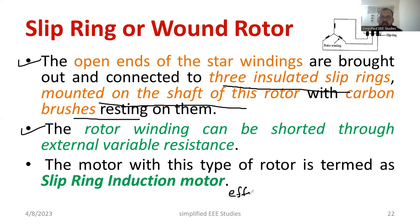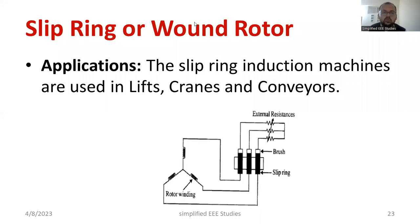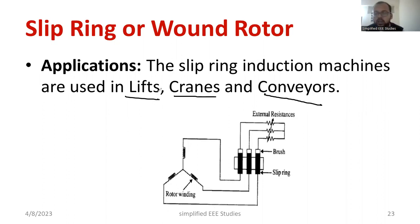In the slip ring induction motor, high starting torque can be achieved, but adding more resistance reduces the overall efficiency. Comparing with the squirrel cage induction motor, the efficiency of the slip ring induction motor is lower. However, the advantage is that speed can be easily controlled and high starting torque is achievable. Applications include cranes, conveyors, lifts, and electric vehicles — all of which require high starting torque.